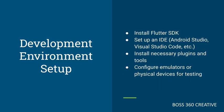Before you can start building your Flutter app, you'll need to set up your development environment. First, you'll need to install the Flutter SDK, which you can download from the official Flutter website. Next, you'll want to set up an integrated development environment, or IDE, like Android Studio or Visual Studio Code. Once you have your IDE set up, you'll need to install the necessary plugins and tools for Flutter development. Finally, you'll want to configure emulators or connect physical devices for testing your app.